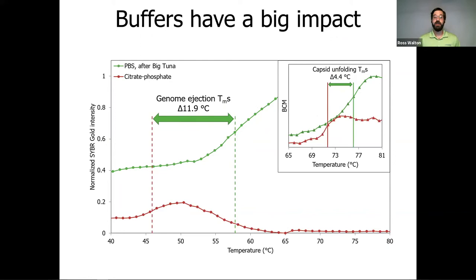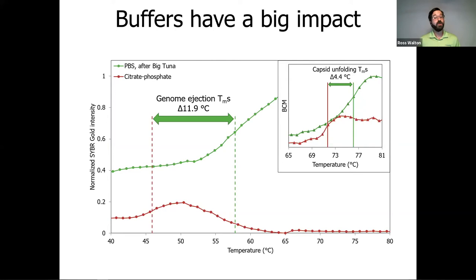Looking at the Tms of genome ejection between the PBS process control and the citrate phosphate buffer, there was a huge impact — a difference of 11.9 degrees. Compare that to the capsid unfolding Tm determined using intrinsic fluorescence, where the difference was only 4.4 degrees Celsius between PBS and citrate phosphate buffer. To get a full picture of AAV, you really need to look at both genome ejection and capsid unfolding, because they're not always going to be the same. UNCLE is the only tool that lets you look at both. If all you have is another intrinsic DSF tool, you're going to miss out on this important genome ejection phenomenon.